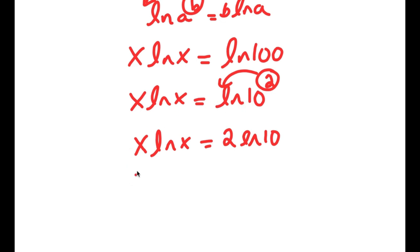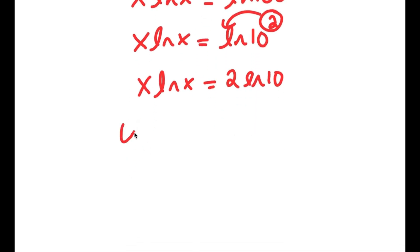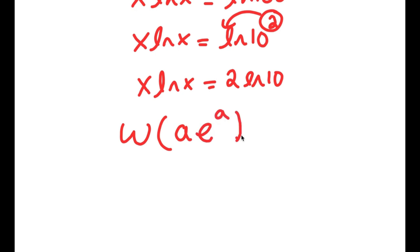There's something called the Lambert W function. If I apply the Lambert W function to something in the form a times e to the power of a, the result is a. So if something is in the form a times e to the power of a, that equals a — that's basically what the Lambert W function does.